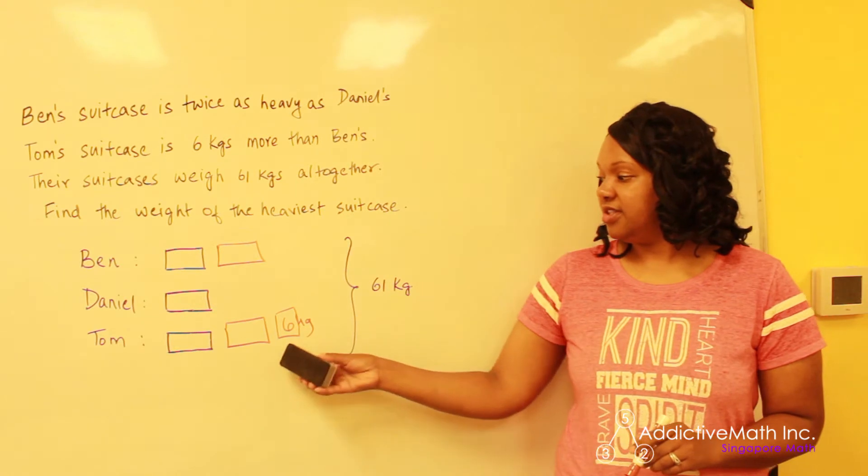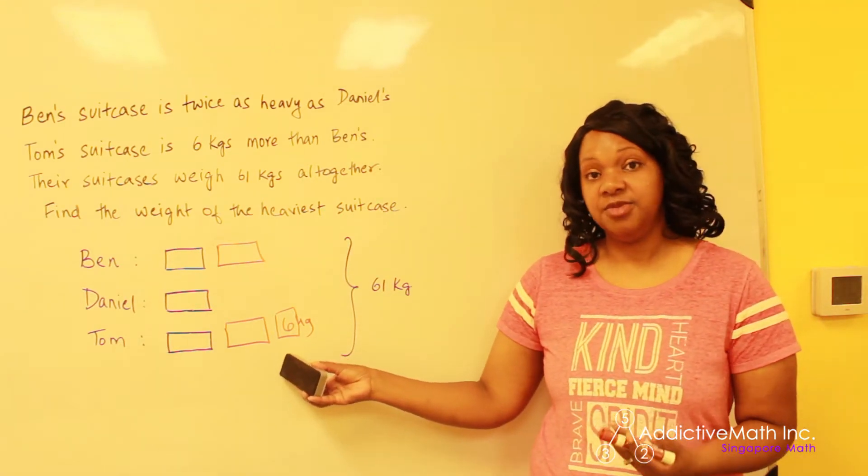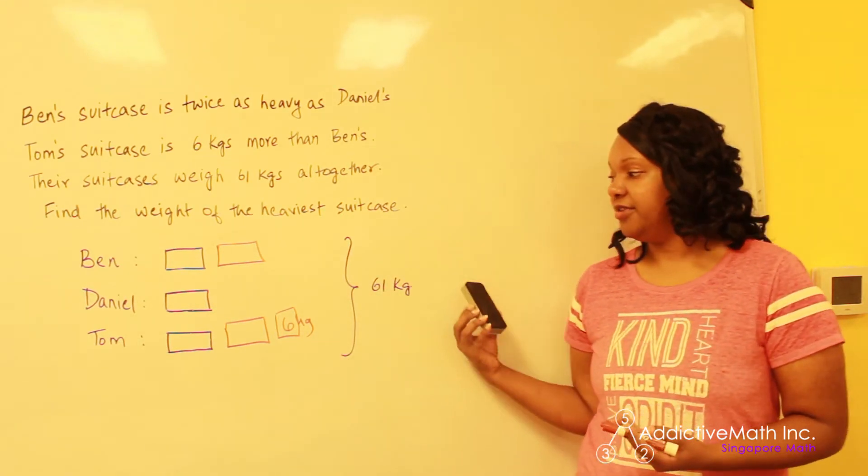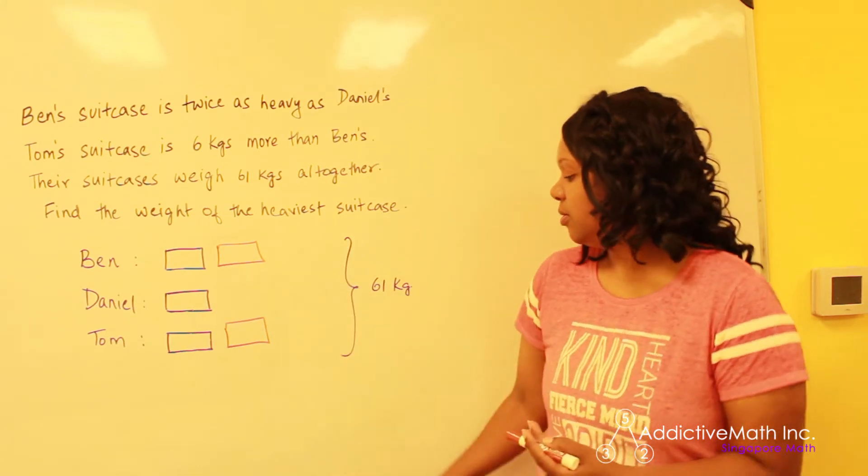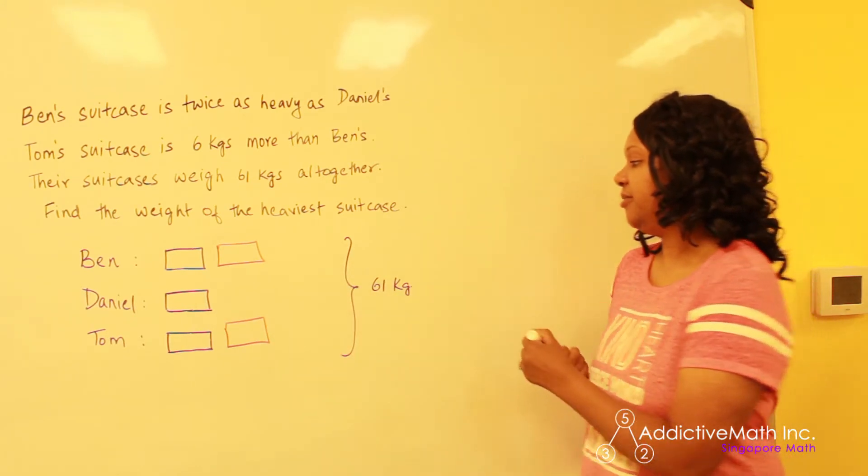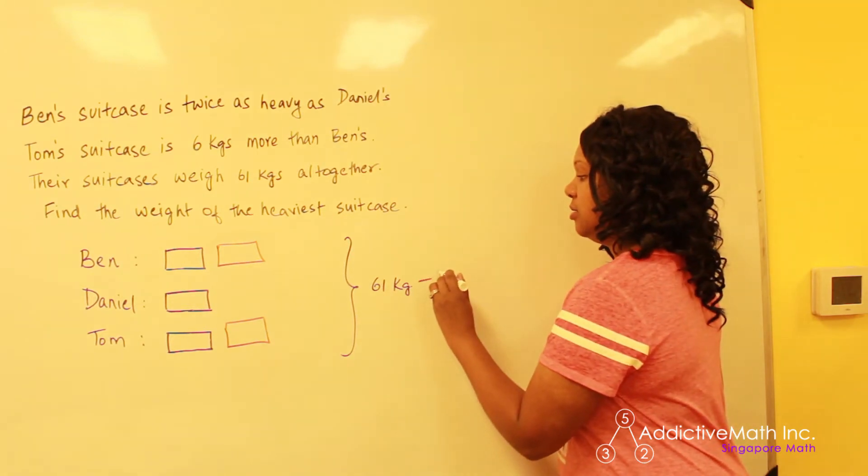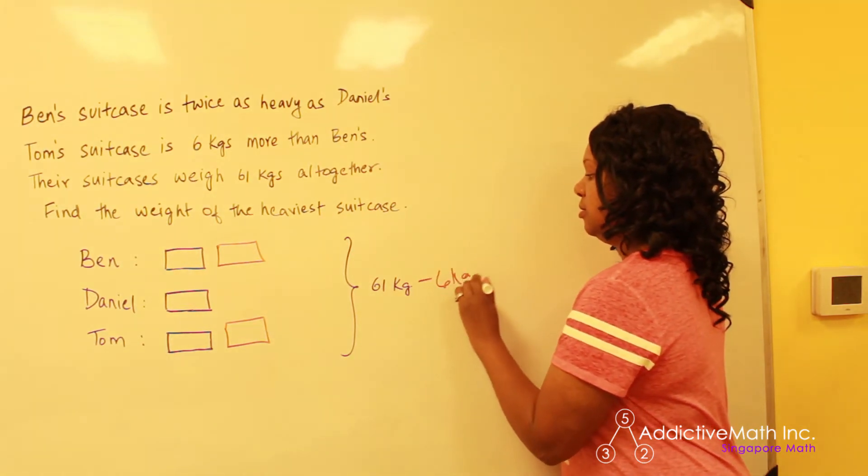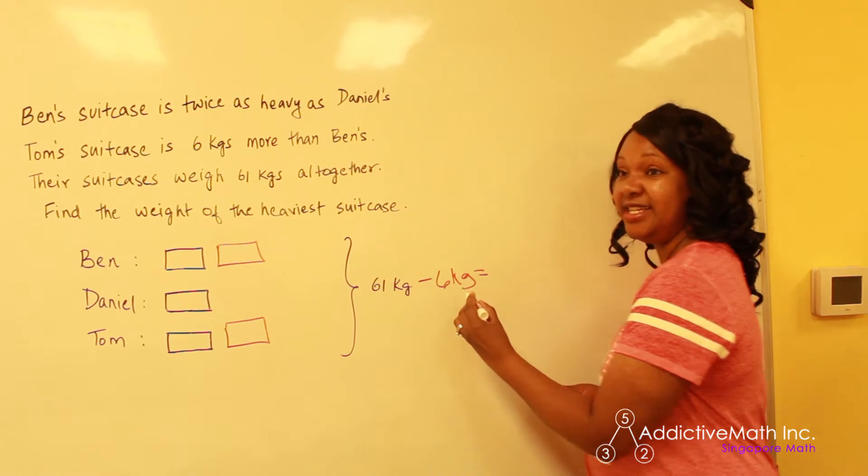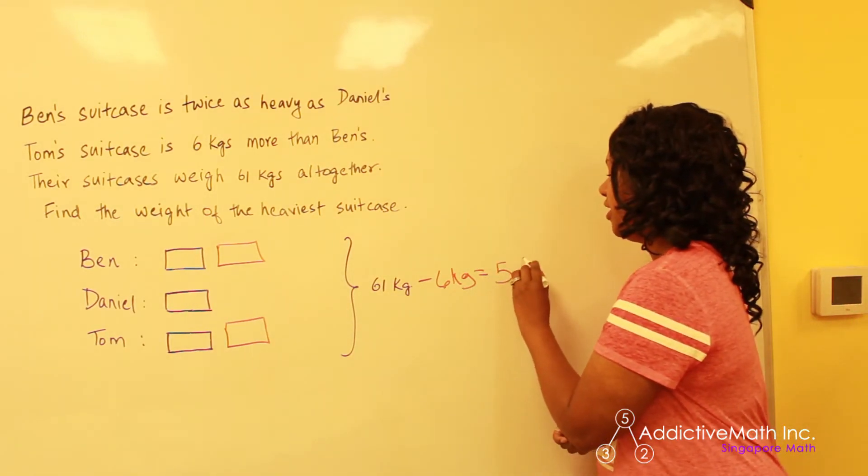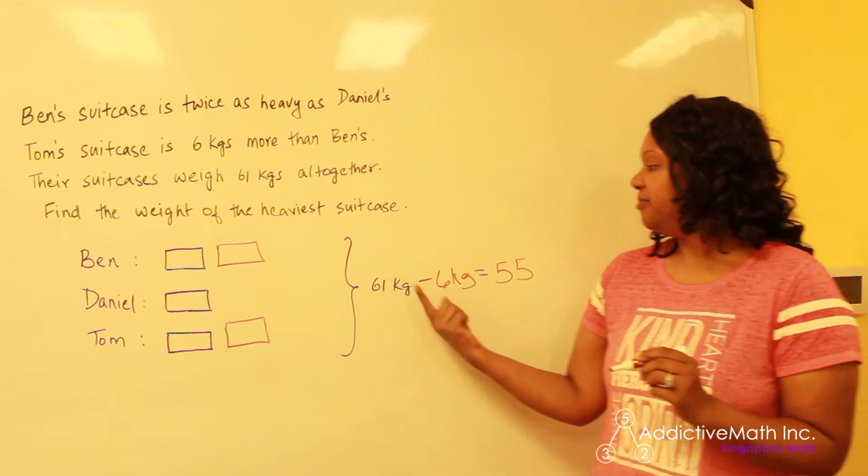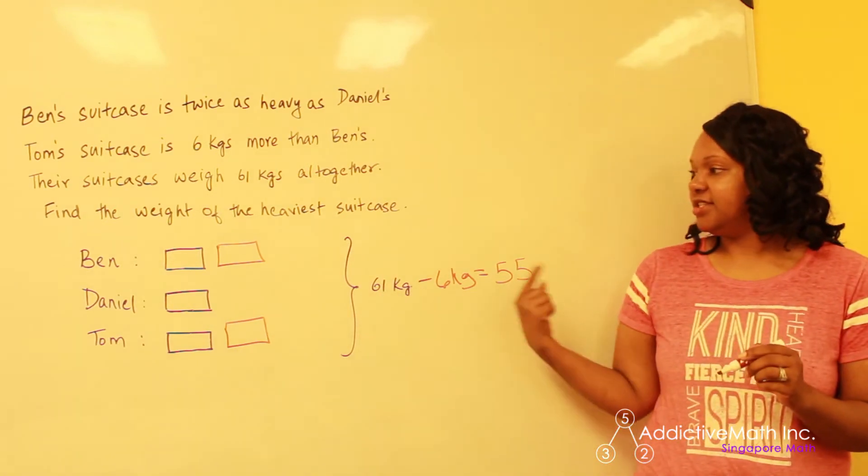So what we need to do is get rid of this six, which means we're going to subtract and we're going to bring it over here. So if we get rid of it over here, we need to put it over here, we're going to subtract. So 61 minus six, you can do that in your head. If not, we'll work it out for you.